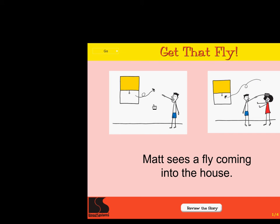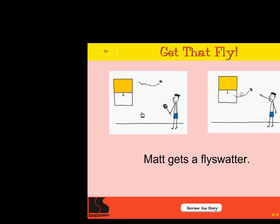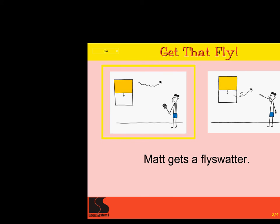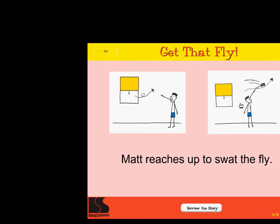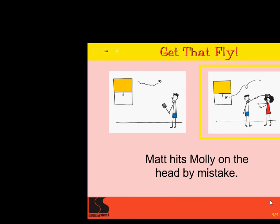Click on the picture that matches these words: Matt sees a fly coming into the house. Excellent. Click on the picture that matches these words: Matt gets a fly swatter. Correct. Click on the picture that matches these words: Matt reaches up to swat the fly. Super. Click on the picture that matches these words: Matt hits Molly on the head by mistake. Right on. Get that fly.